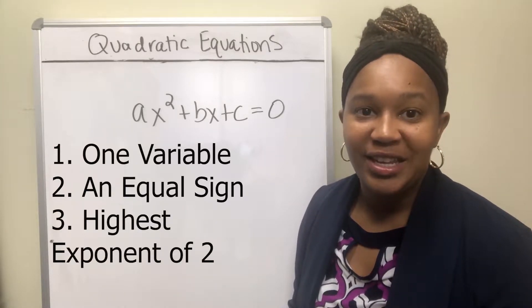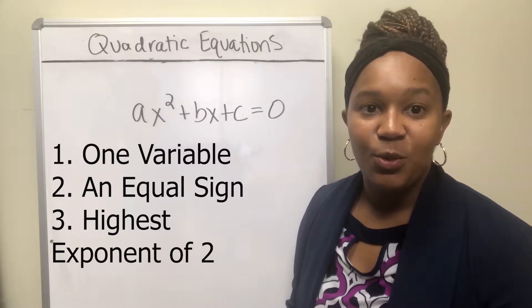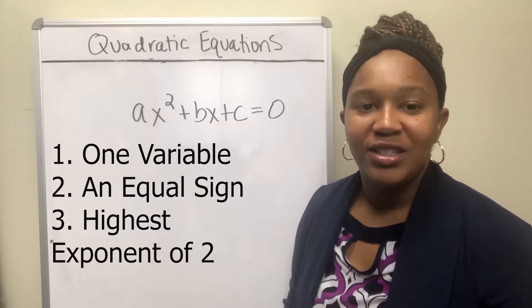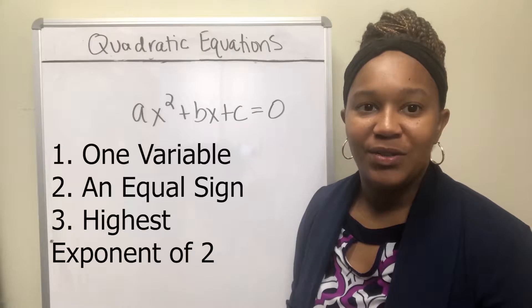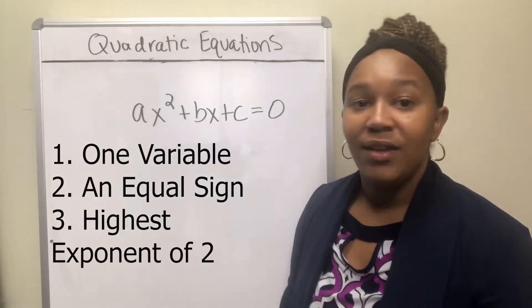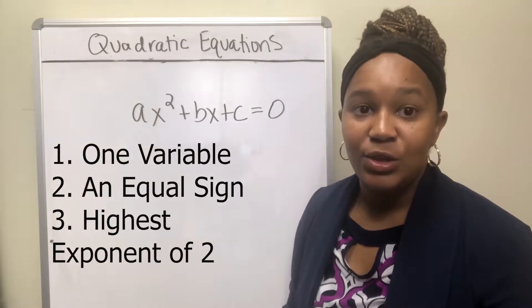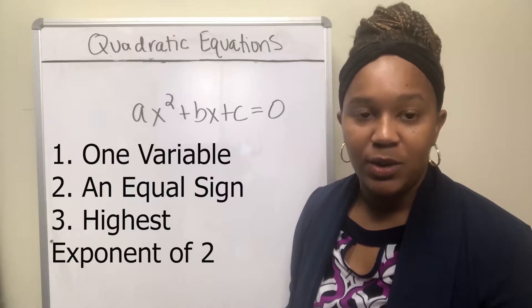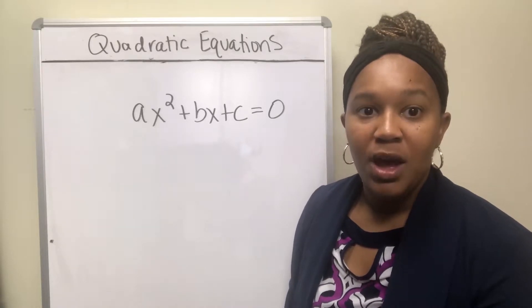So the three things again: there has to be one variable, an equal sign, and the highest exponent on the variable has to be two. If you have those three things, then you have a quadratic equation.